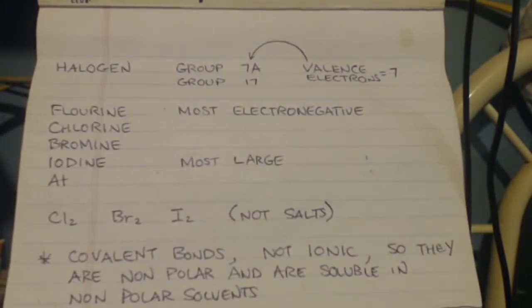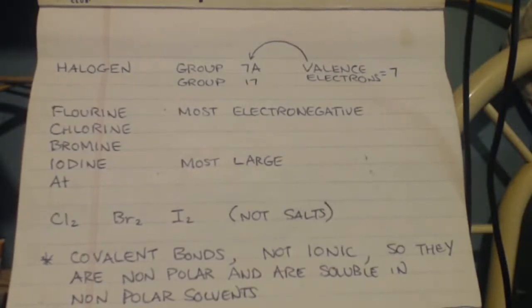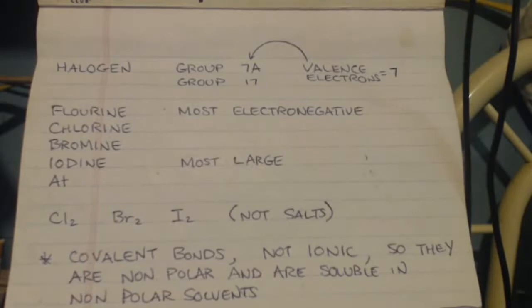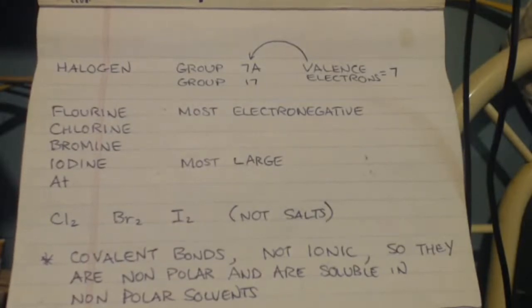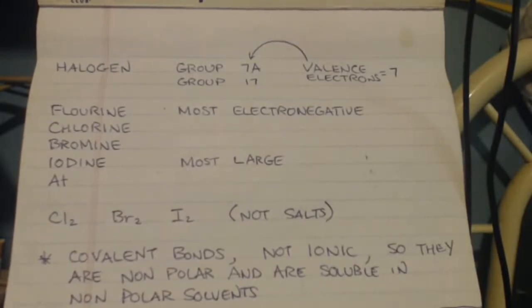They're really electronegative because they only need one more valence electron to fill up their whole valence orbit there. And that would make them like royalty, or they'd be noble then, or noble electron configuration. And that's what they want.